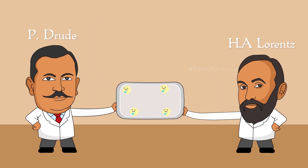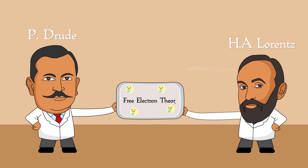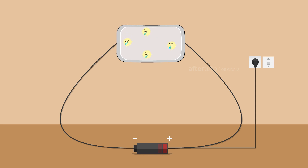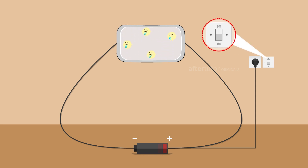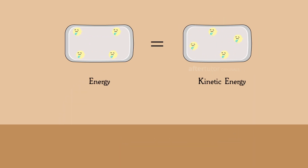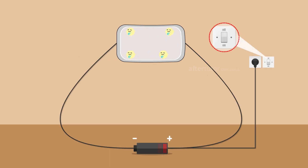Drude and Lorentz discovered the movement of electrons in metals, known as the free electron theory. They took a metal body without the attachment of electric current. Without electrical current, the electrons are able to move within the metal. The total energy of the electron in the metal is equal to its kinetic energy, as the metal is not connected to any external field.